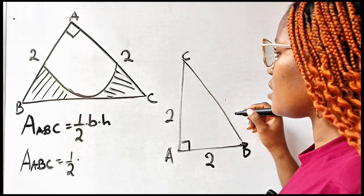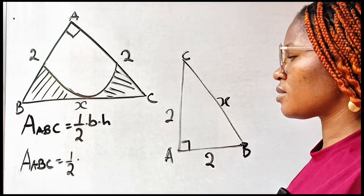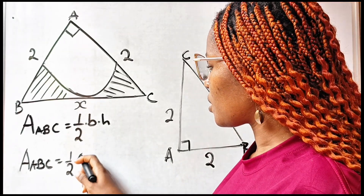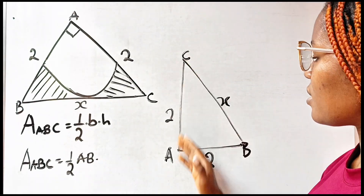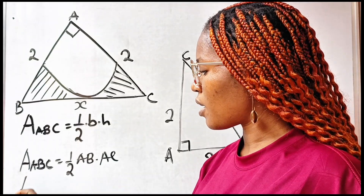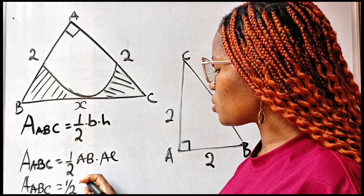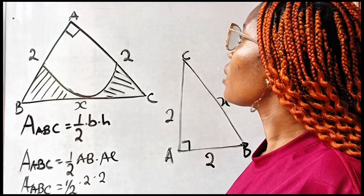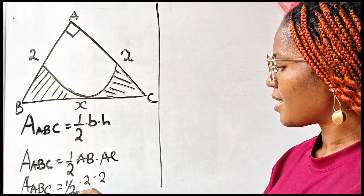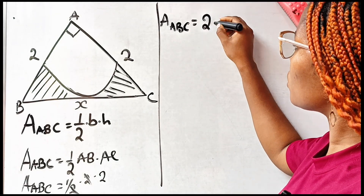BC is the hypotenuse. Now let's call BC, X. The base is AB, and the height is AC. So: half multiplied by AB multiplied by AC. Solving further, we have area of triangle ABC equal to half multiplied by 2 and 2. We divide and we are left with 2. So the area of triangle ABC is equal to 2 units squared.